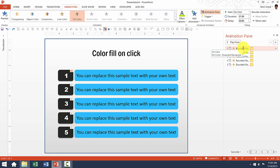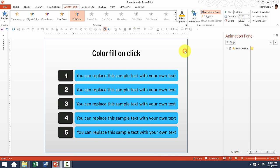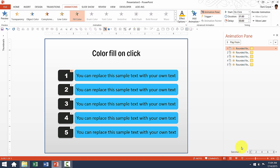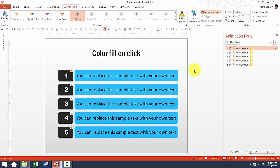The first option is to select the animation and change the effect options for that specific animation. In this case, the animation applied is a fill color animation and the change of color is to fluorescent green. Let's say I want to change the color to orange — I go to Effect Options and choose the darker orange color. So in slideshow mode, the first point changes to orange instead of green, while the second point is still in green because we haven't changed it.